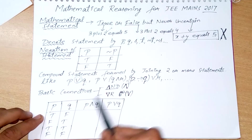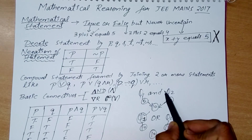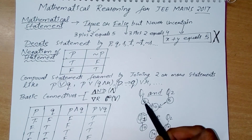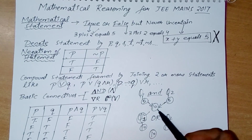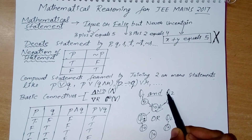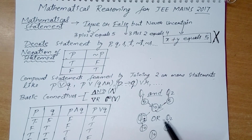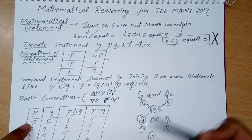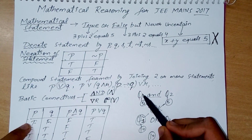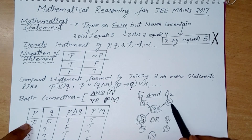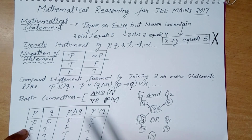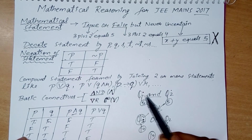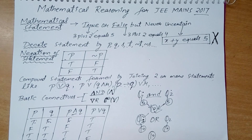To understand AND using an analogy: if two questions are connected by AND, and each carries five marks, we get 10 marks only when we attempt both. If we attempt only one, we get false. If we attempt neither, we get false. Only when both are attempted do we get true.